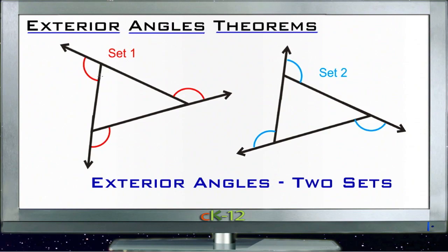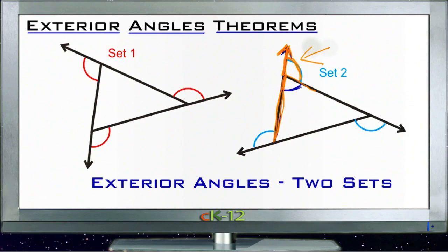An exterior angle is the angle formed between the interior angle on a triangle and a straight line drawn from that side of the triangle. Looking at set two here — if we continue the left-hand side of the triangle upward, the angle formed between that side and the outside of the next side over is the exterior angle. The interior angle is the one inside the triangle, while the exterior angle forms the remainder of 180 degrees with that interior angle.